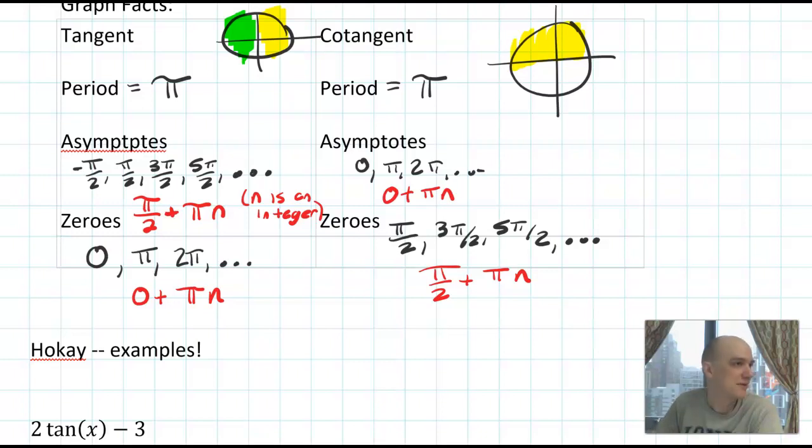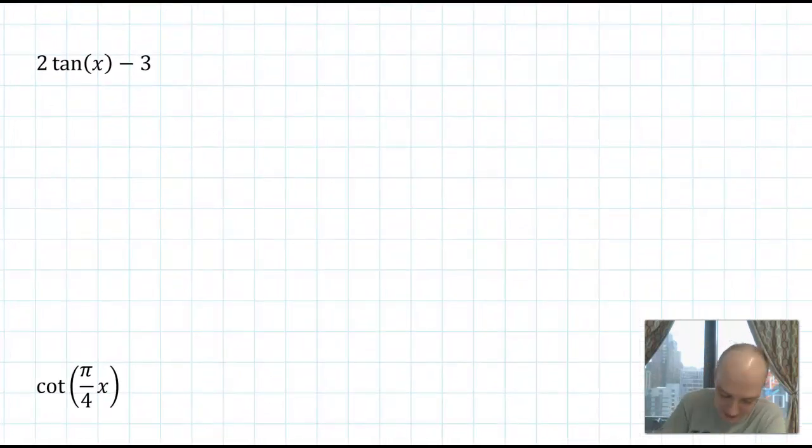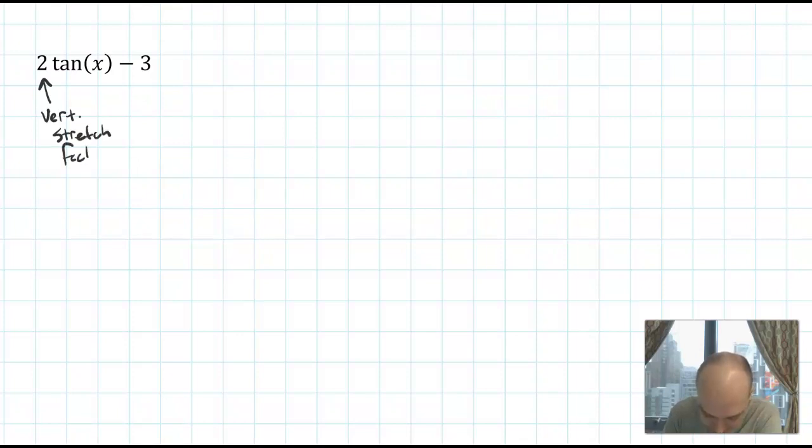Now let's do some graphs. I think I have three or four examples prepared for us today. We'll start with a pretty simple one: 2tan(x) - 3. We don't need to do anything fancy here. We just need to look at what it's saying. 2 is a vertical stretch by factor 2 and 3 is a shift down 3 units.